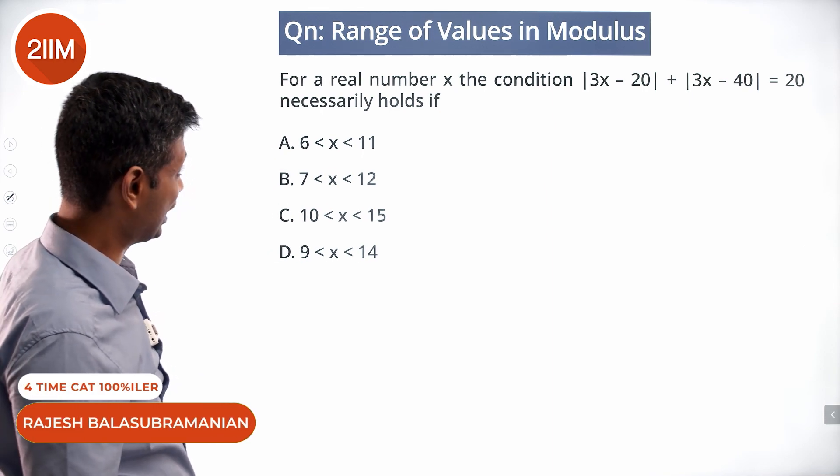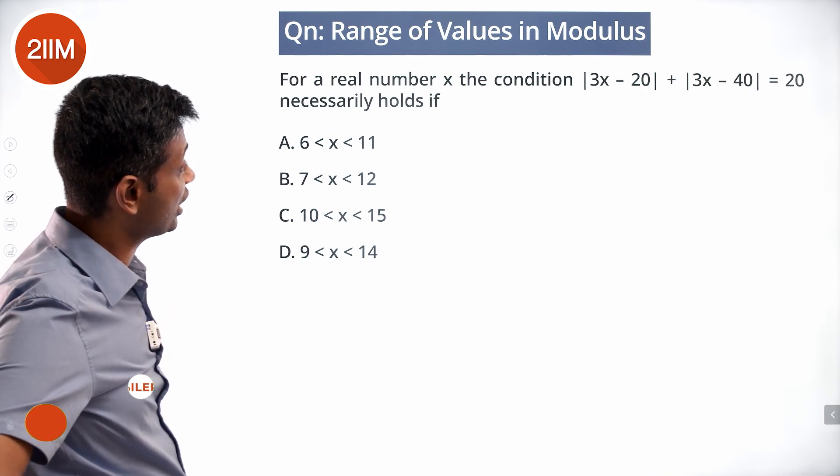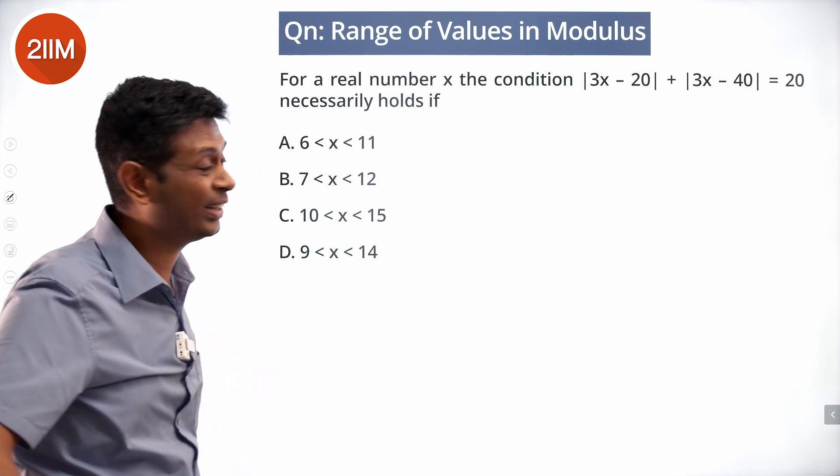For real number x, the condition modulus of 3x minus 20 plus modulus of 3x minus 40 equal to 20.